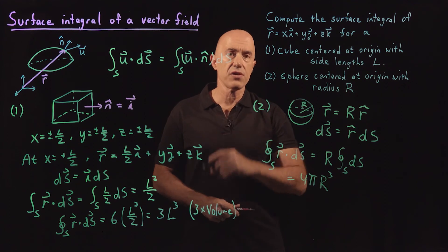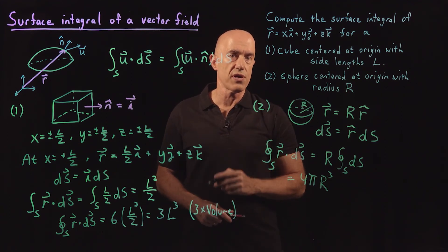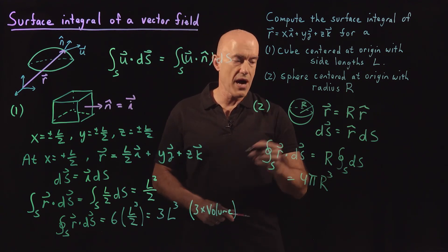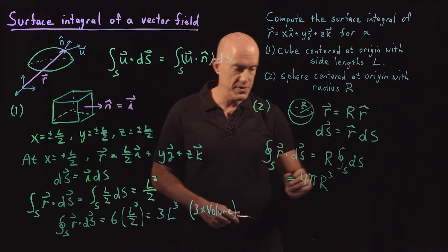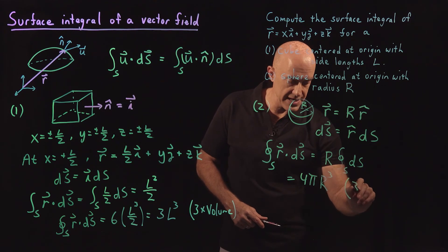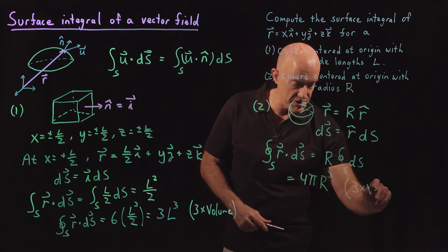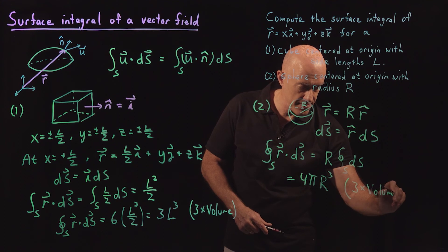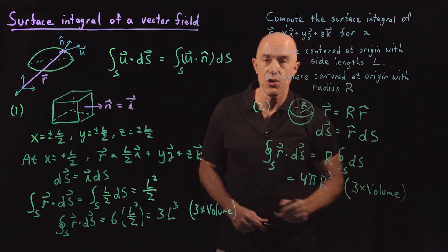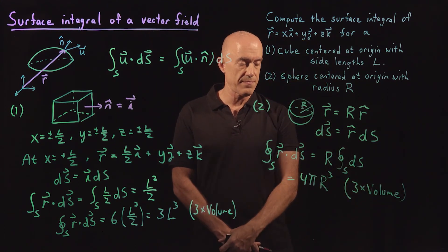The volume of a sphere is (4/3)πR³, so again this works out to 3 times the volume of the sphere. We'll show that from the divergence theorem.